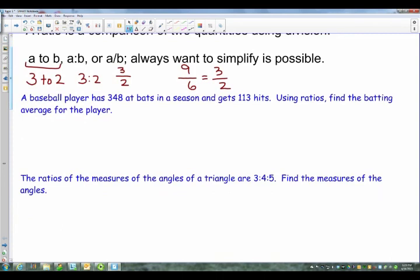Alright, so let's see how this works in an actual problem. A baseball player has 348 at-bats in a season and gets 113 hits. We want to know what's the batting average. Now this requires you to know a little bit about what batting average is. But it's a ratio of how many hits they get out of how many at-bats. So it's hits to at-bats. Okay, so we take that and we set it up as 113 hits over 348 at-bats.